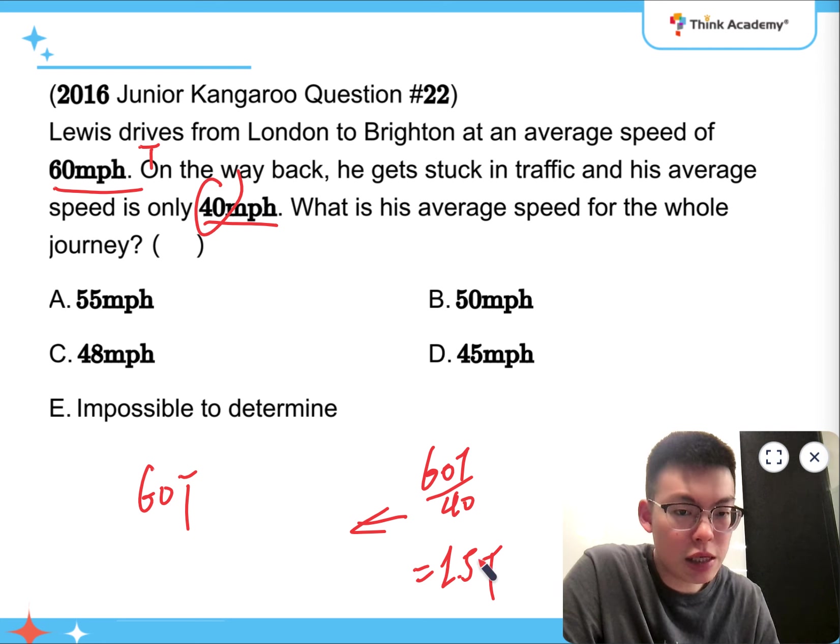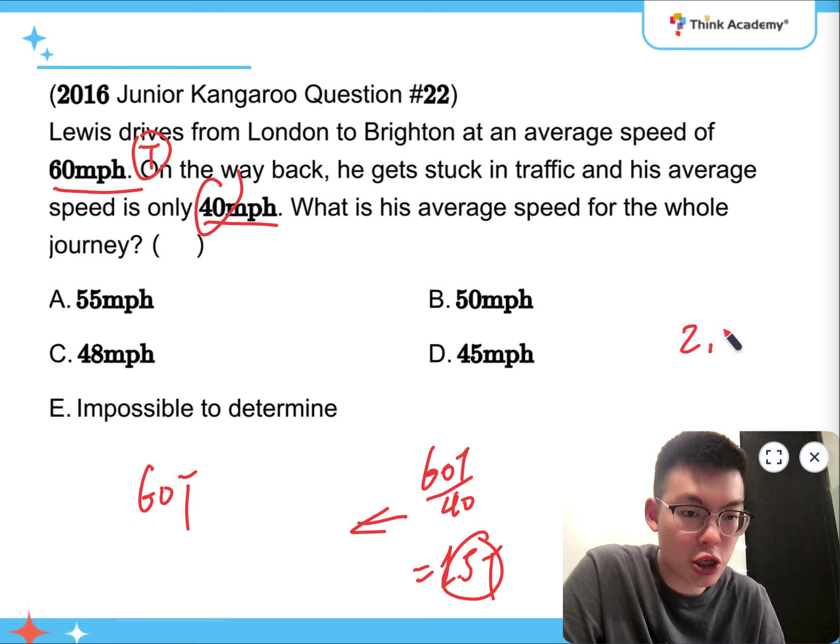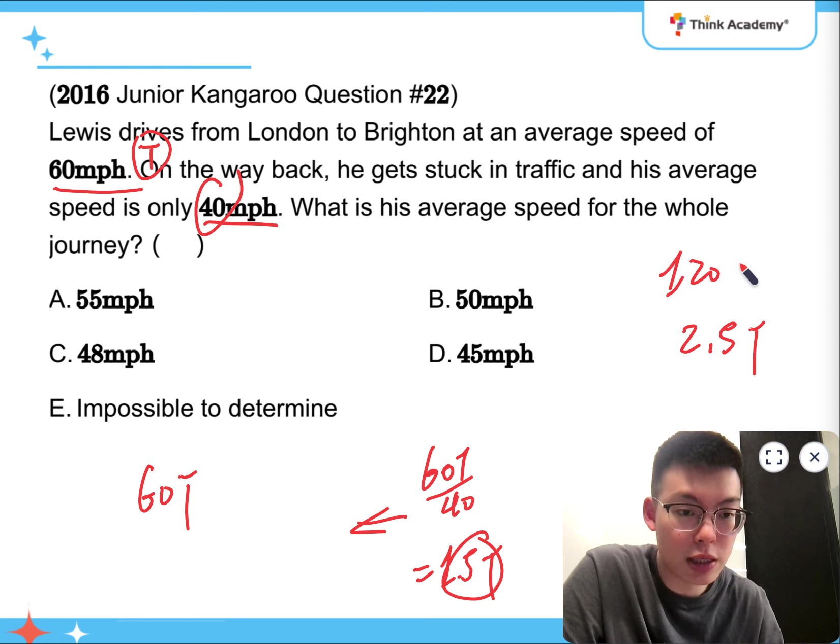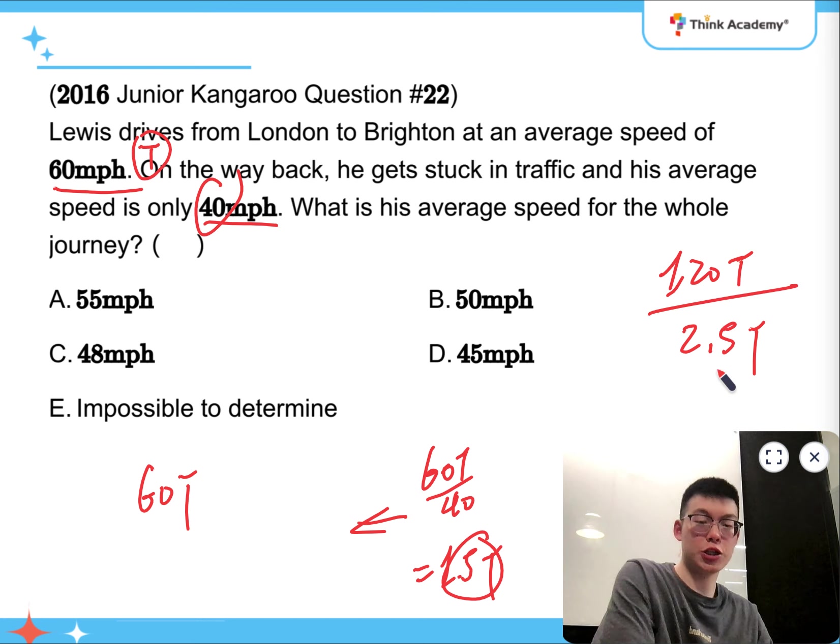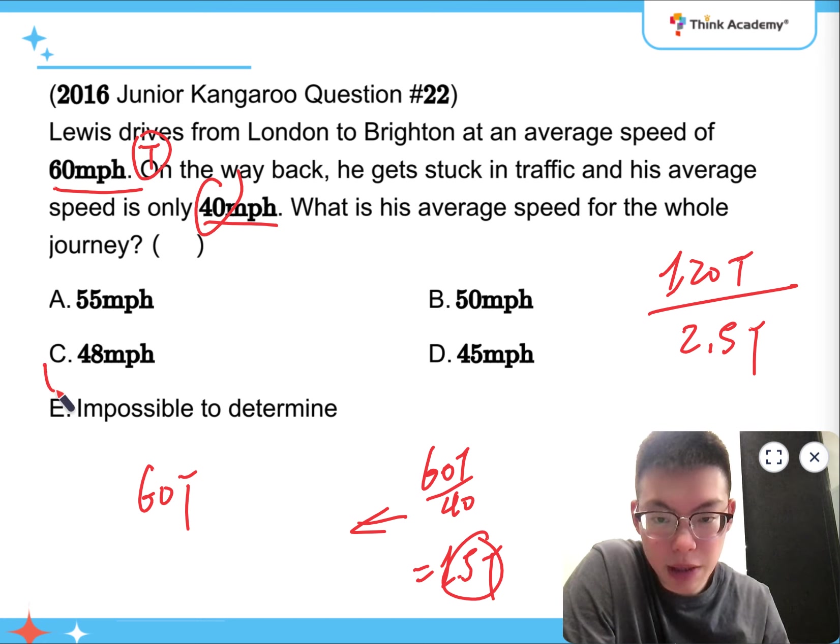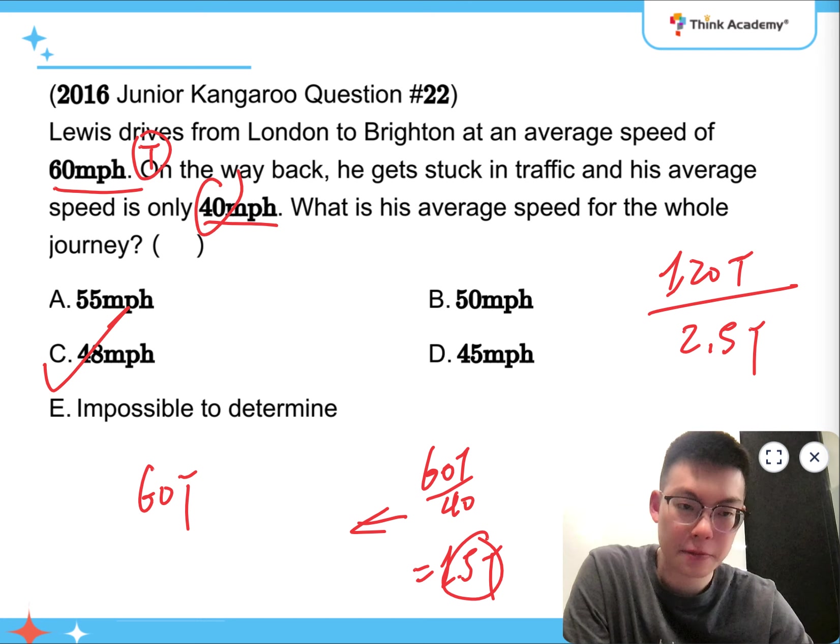So that can still be calculated, because the total time that it's taken is going to be T adding 1.5T, which is 2.5T. That's the total time. And the total distance is 60T times 2, which is 120T. So if I'm dividing 120T by 2.5, that's going to be equal to 48. So the answer is going to be C. All right.